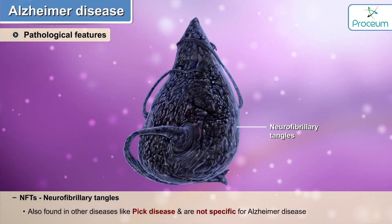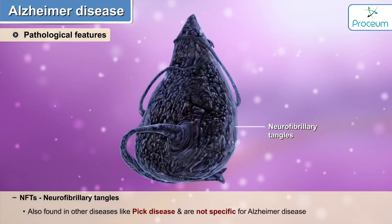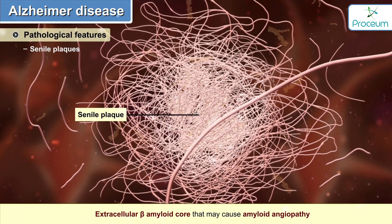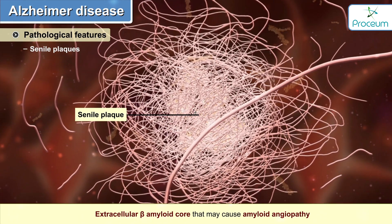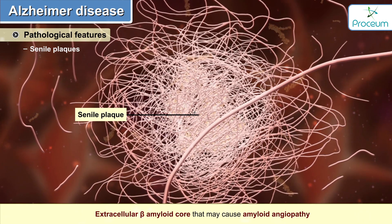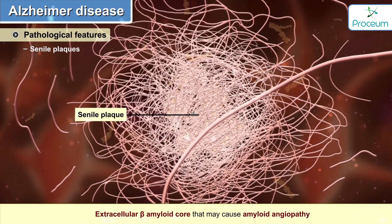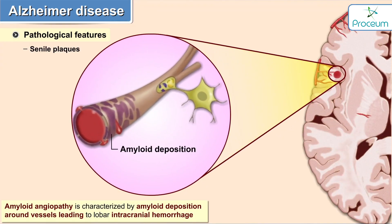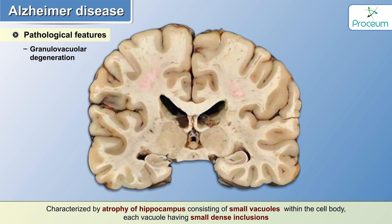Therefore, NFTs are not specific for Alzheimer's disease — a point worthy to be remembered. Senile plaques are extracellular beta amyloid cores that may cause amyloid angiopathy, which is characterized by amyloid deposition around vessels, most often leading to lobar intracranial hemorrhage.